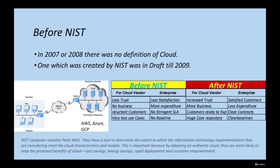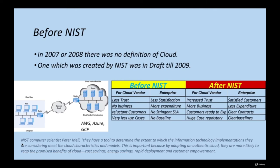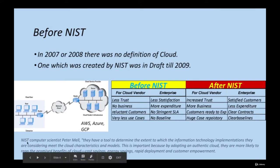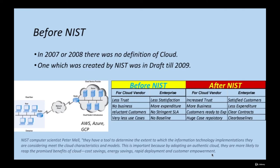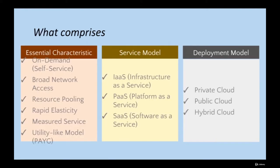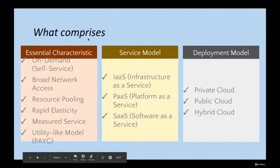NIST has developed various standards related to technologies, application security, and more. NIST scientists now have a tool to determine the extent to which an implementation meets cloud characteristics and models. By adopting an authentic cloud that provides those five characteristics, organizations are more likely to reap the benefits of cloud — cost savings, energy savings, rapid deployment, and customer satisfaction. This tool was provided by NIST for both customers and service providers.